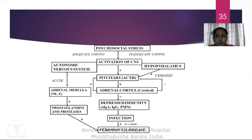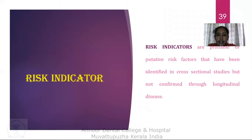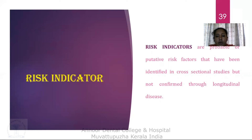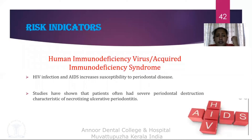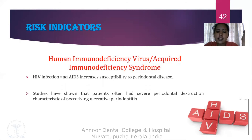Coming on to the next session: risk indicators. Risk indicators are probable or putative risk factors that have been identified in cross-sectional studies but not confirmed through longitudinal studies. Under risk indicators we have HIV/AIDS, osteoporosis, and infrequent dental visits. HIV infection and AIDS increase the susceptibility to periodontal disease. Studies have shown that patients with HIV or AIDS have severe periodontal destruction characterized by necrotizing ulcerative periodontitis, placing them at greater risk of developing periodontal disease.